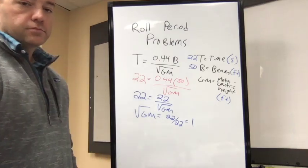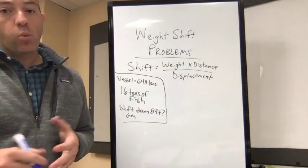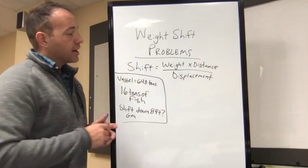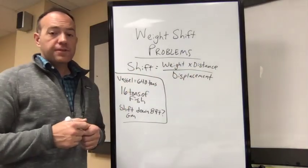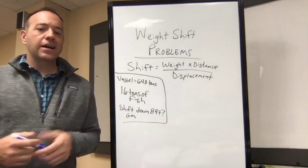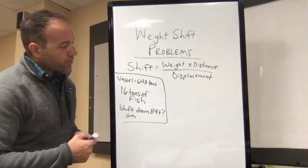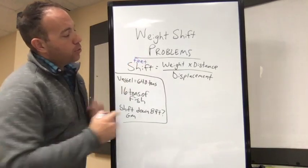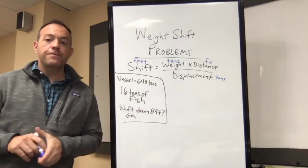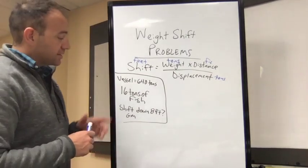Another type of stability problem on a 100 to 1600 ton exam is a weight shift problem. The formula is: shift in GM = (weight × distance shifted) / displacement of the vessel. If your vessel is really heavy, a weight shift won't have a big impact. If the displacement is low and you move a heavy weight, it's going to have a bigger impact on GM.